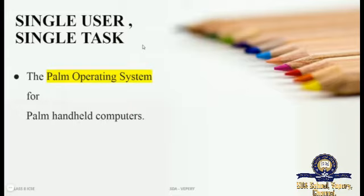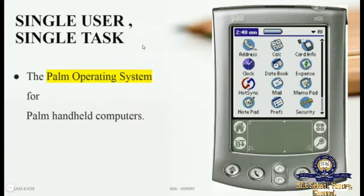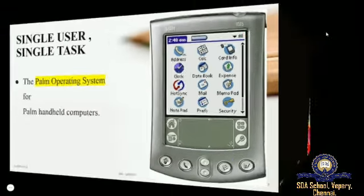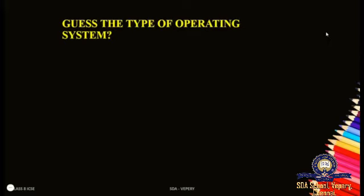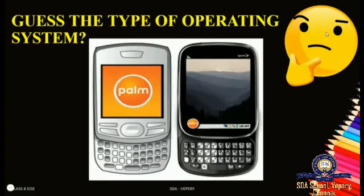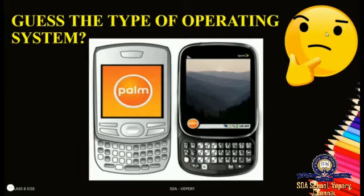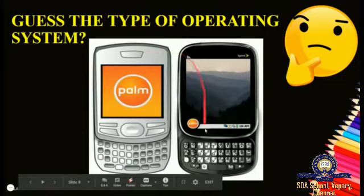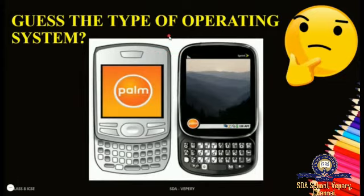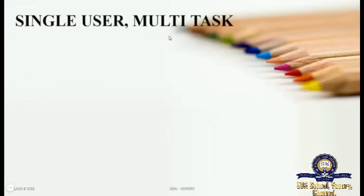You might have seen a computer, laptop, notebook, tab, and mobile. What does a palm-handled computer look like? It looks like a mobile phone where you can hold it in your hand and perform all the tasks which you performed on the computer. This is called a palm-handled computer. Now tell me what type of operating system is used in this. Yes, it is Palm OS, used in palm-handled computers.